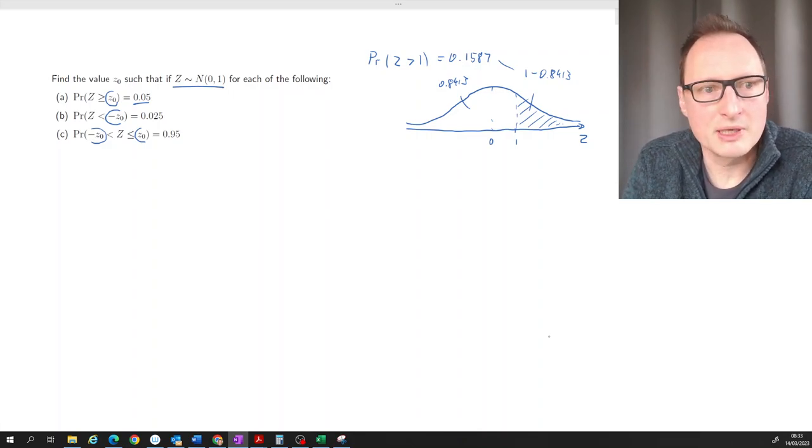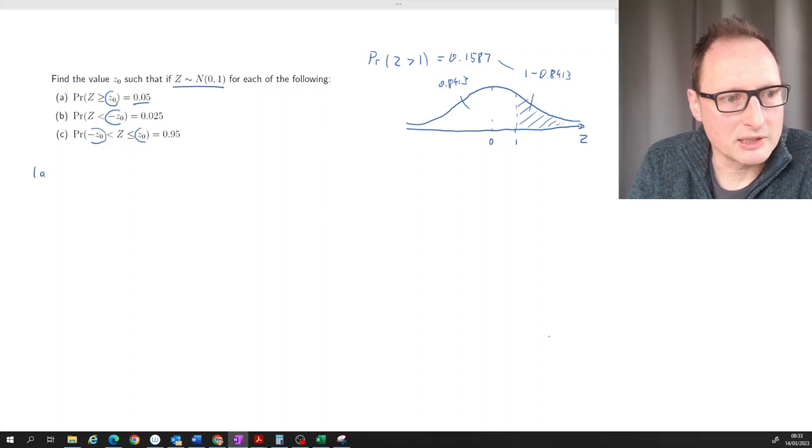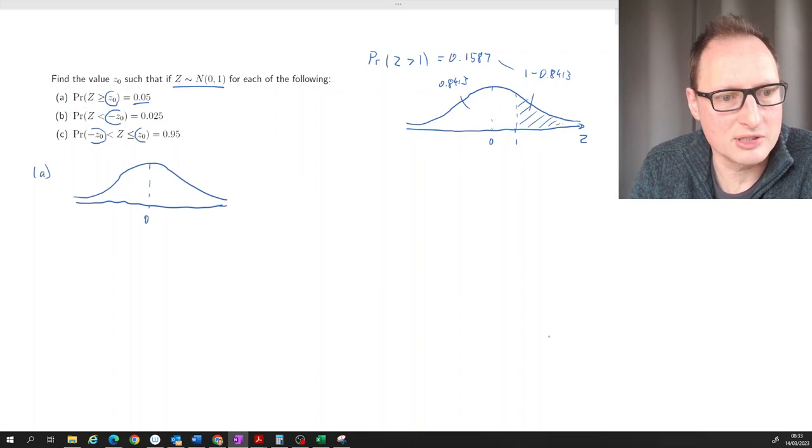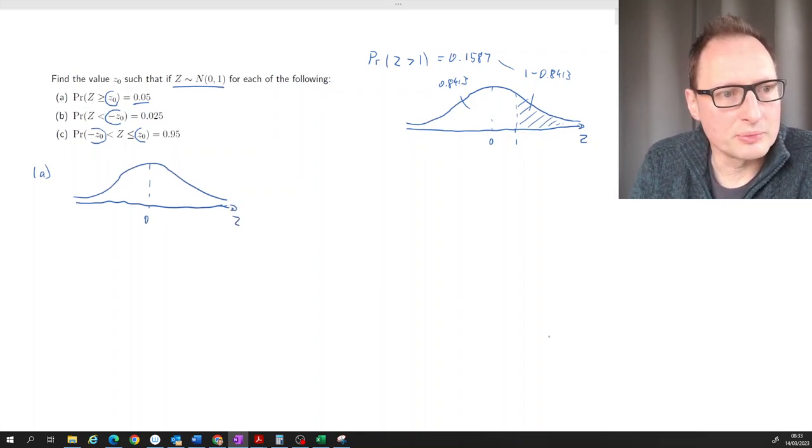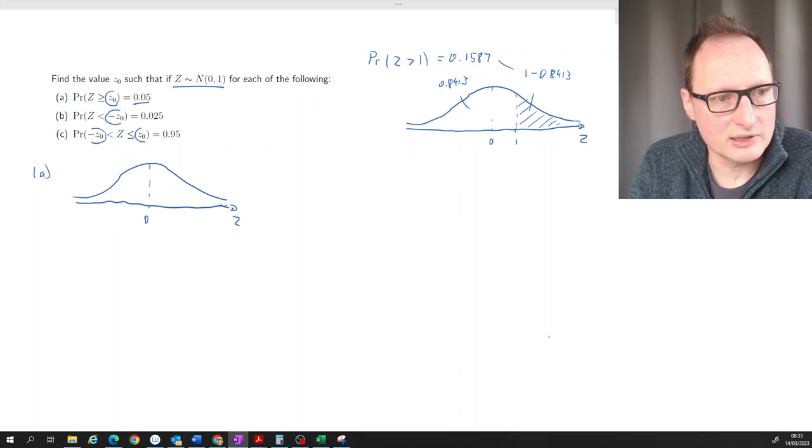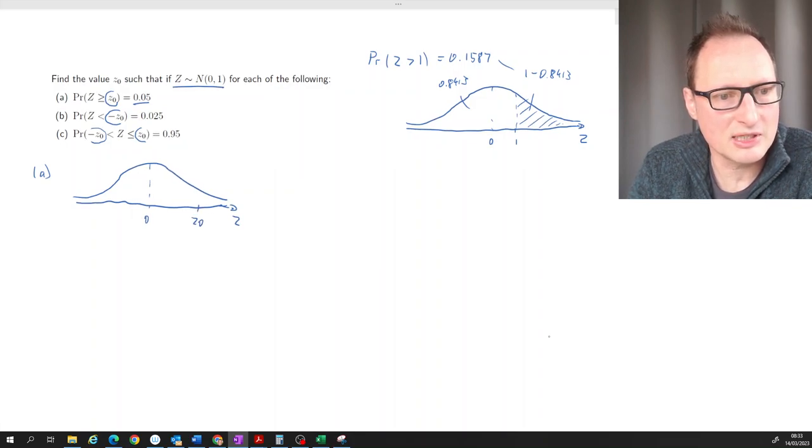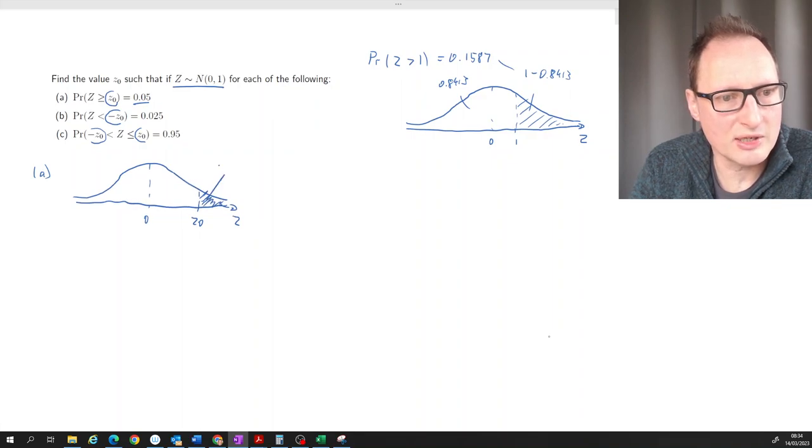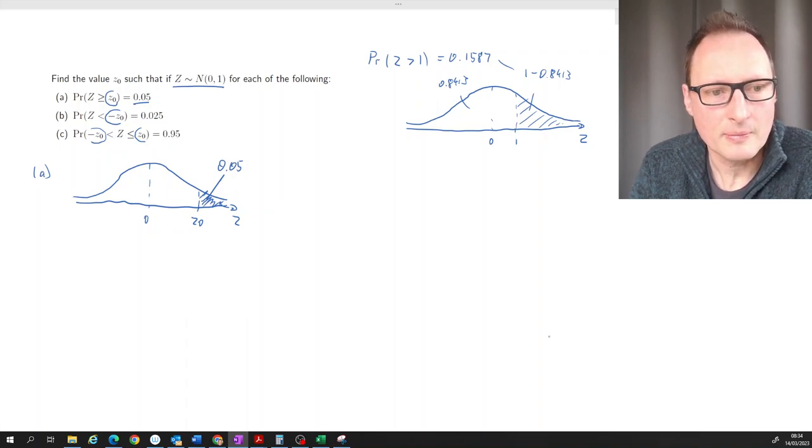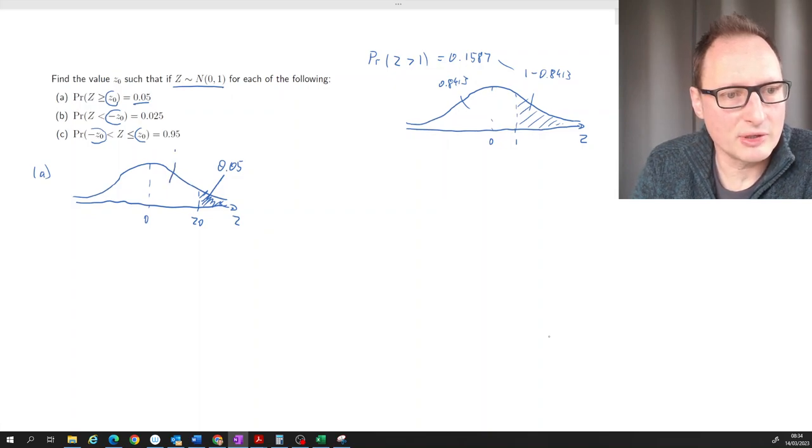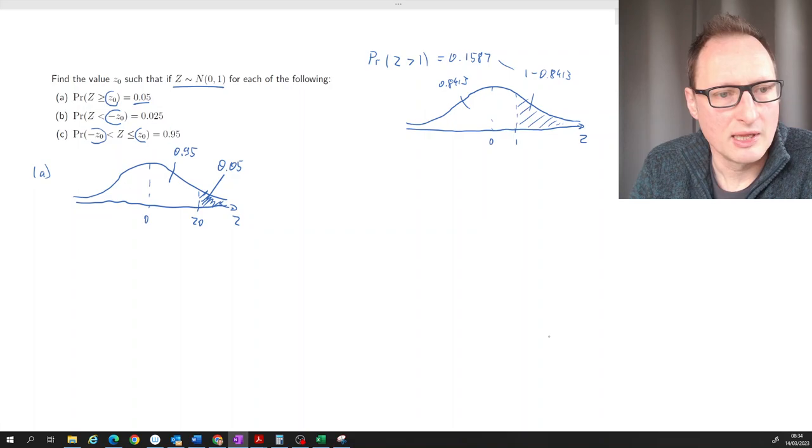This is how we traditionally use these tables. But now let's go to part (a). Let's sketch a picture first. We know there's a standard normal distribution. The mean is zero. We know the probability that z is larger than or equal to a certain value z₀ is 5 percent. We are given that z₀ and this area is 5%, and the question is what is that z₀. If this area is 5%, then this area here is 95 percent, and it's these smaller or equal values which we find in the table.